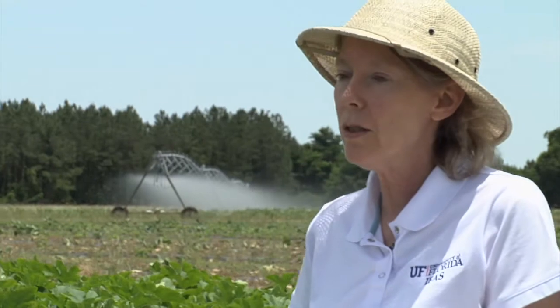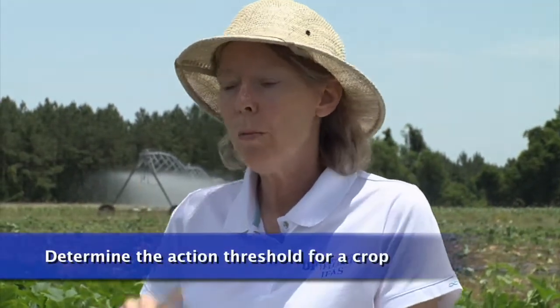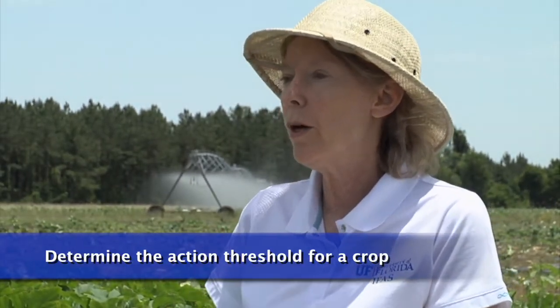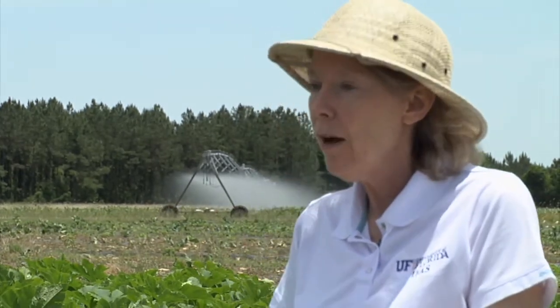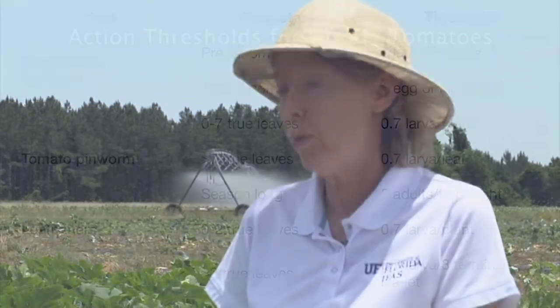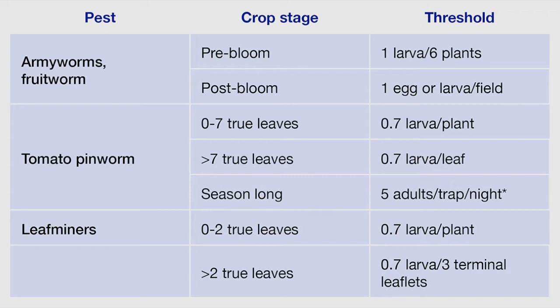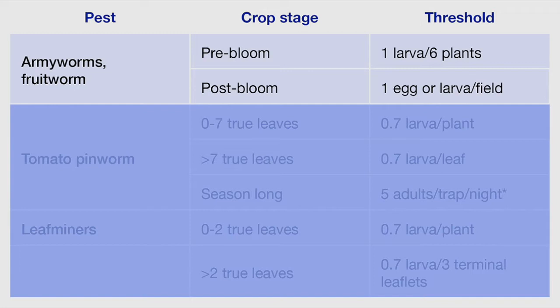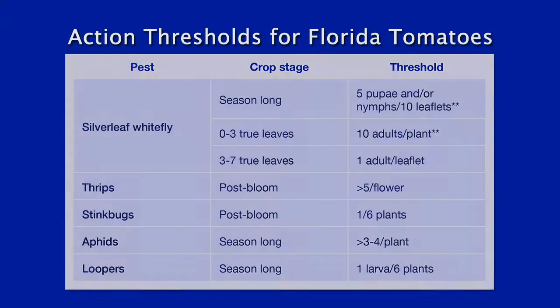Thresholds have been around a long time; they're very difficult to develop and it takes a lot of research. What we're most interested in is an action threshold — that's the point where the yield loss or damage will exceed the cost of controlling the problem if you don't act. We have those kinds of thresholds for some crops like tomatoes: if you have one tomato fruit worm for every six plants before there's fruit, that's your threshold. When you have fruit, you basically don't want any — you find one in your field and you have to do something. But in a lot of cases we don't have thresholds, so you have to use your experience and information gathered through scouting to develop your own sense of what you can tolerate.